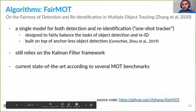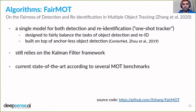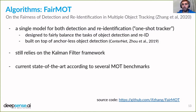Another algorithm, quite brand new from this year, is called FairMOT. It's slightly different from the previous ones because it has a single model combining the two tasks of object detection and extraction of visual embeddings — so object detection and re-identification are in a single model. Therefore it's called a one-shot tracker, as opposed to the two-step methods described before. It still relies on the Kalman filter framework, and according to several MOT benchmarks it's the current state-of-the-art algorithm.